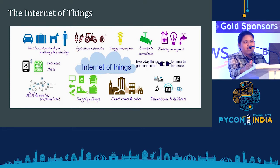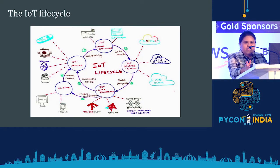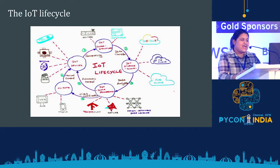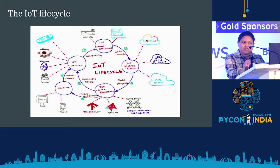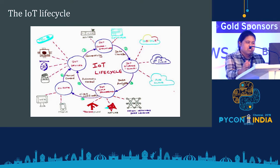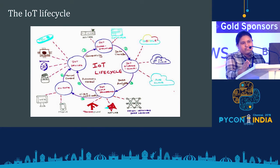IoT devices always need network connections and require high availability. Since they are always connected to the internet with continuous flow of data over the network, privacy is also required. The IoT lifecycle starts with IoT devices — sensors collect data, then we have the IoT infrastructure. Post that, the data collected by sensors is stored in the cloud, since industry use cases require huge computing resources that are difficult to host on-premise.